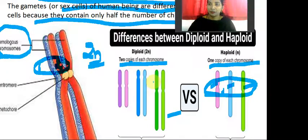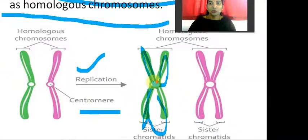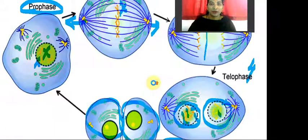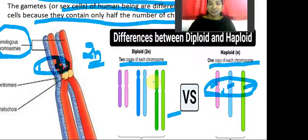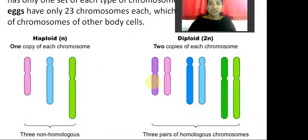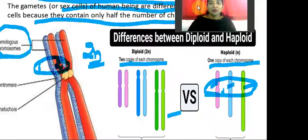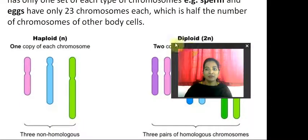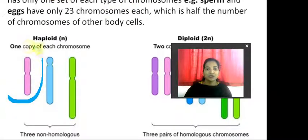I hope you understood the difference between homologous and heterologous, and also between diploid and haploid, and the different stages of chromosomes. A cell which has half the number of chromosomes with one of each kind is called a haploid cell. This is only one of each kind and is considered haploid. The haploid number is indicated as N.